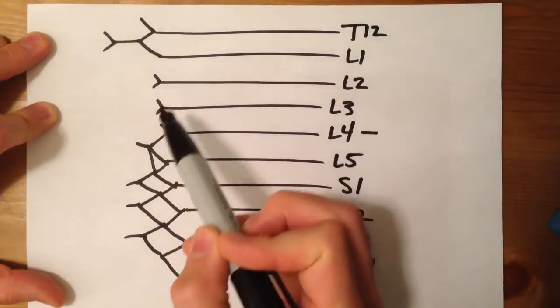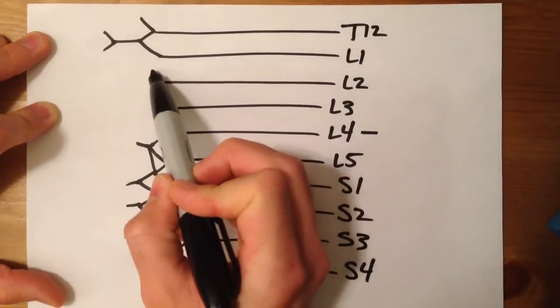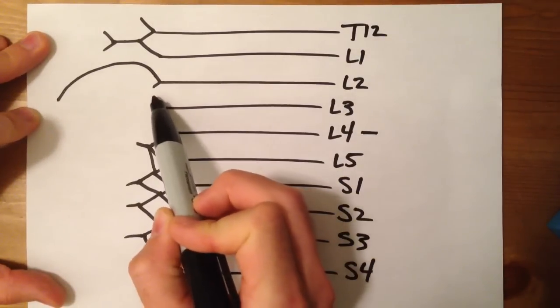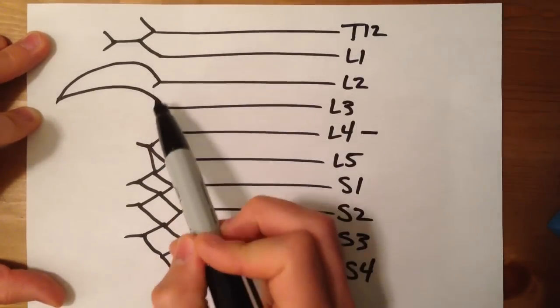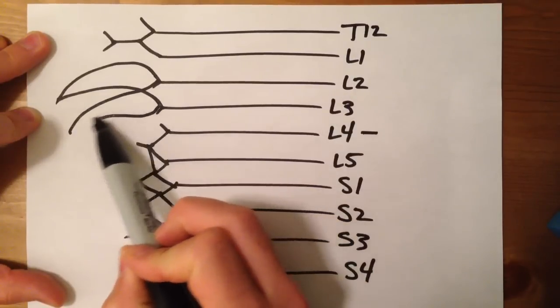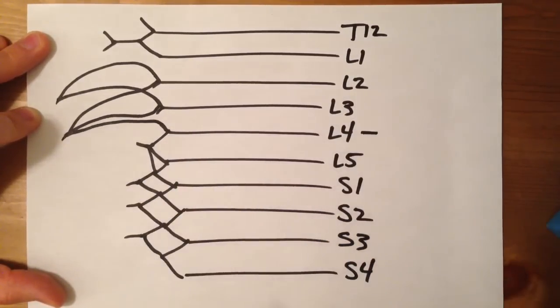Now these top two, from L2 and L3, we're going to connect those, and have them be their own nerve branch. And these two bottom ones will connect with this one that's coming up as well.